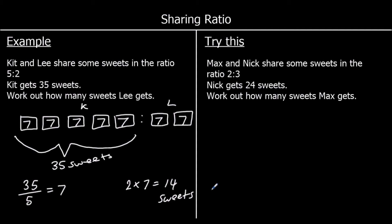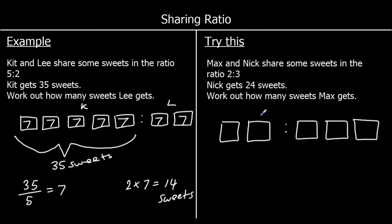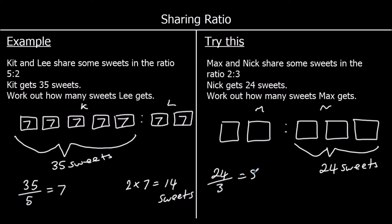And one of these for you to try — so give this a go. Max and Nick share some sweets in the ratio 2 to 3. So Max gets two boxes and Nick gets three boxes. Nick gets 24 sweets, so these three boxes have 24 sweets in them. 24 over 3 is 8, so each box must have 8 sweets in. So how many sweets does Max get? He's got two boxes, so two eights, which is 16 sweets.